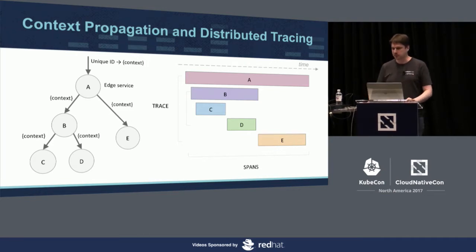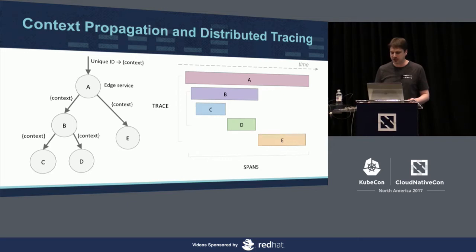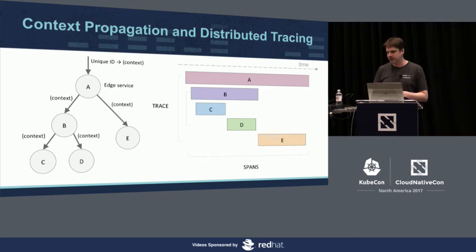You can modify the context to also record causality information — for example, the fact that service B called service C, not just that someone called C in this transaction. If we capture all that data in the background, we can build a trace: the timeline you see on the right.